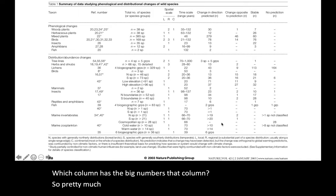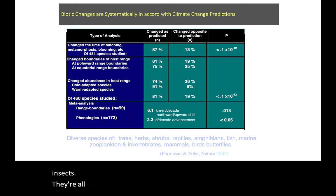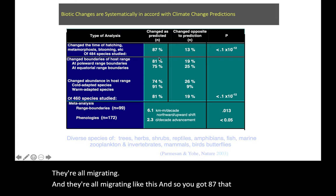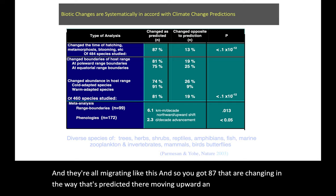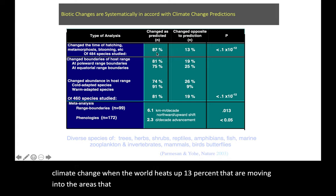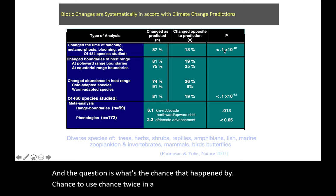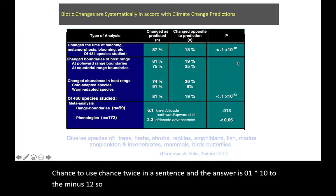Pretty much everything on the planet — and these are mammals, insects, fish, reptiles, marine creatures, zooplankton, birds, lichens, trees, plants — they're all migrating. They're all migrating upward and northward. You've got 87% that are changing in the way that's predicted — moving upward and northward to escape climate change. The question is, what's the chance that that happened by chance? The answer is 0.1 times 10 to the minus 12 — that's 1 times 10 to the minus 13. That is a very low p-value.